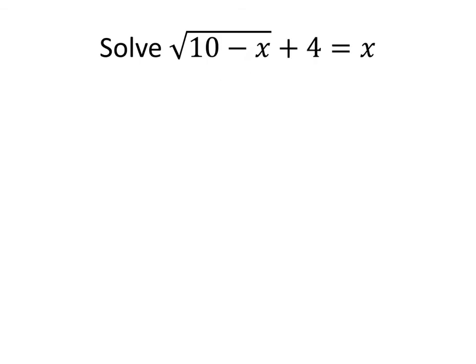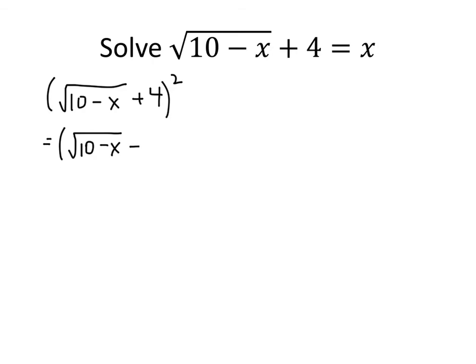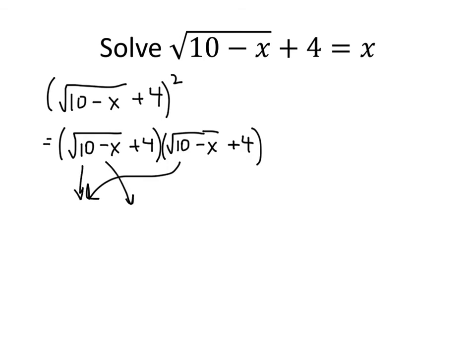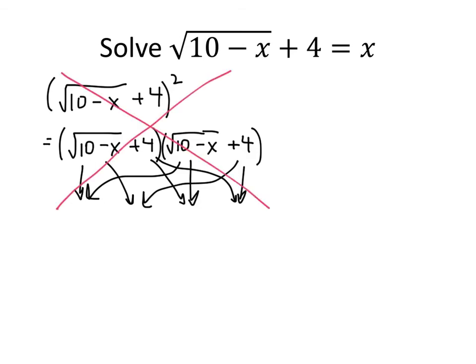Let's do another example. This time we have the square root of 10 minus x, plus 4, equals x. Be careful: the square root symbol ends before the plus 4, so only 10 minus x is inside the square root. If our first step were to square both sides immediately, something bad would happen — squaring the square root of 10 minus x plus 4 means foiling that expression by itself, creating a big mess that still wouldn't eliminate the square root. So this is not the approach.